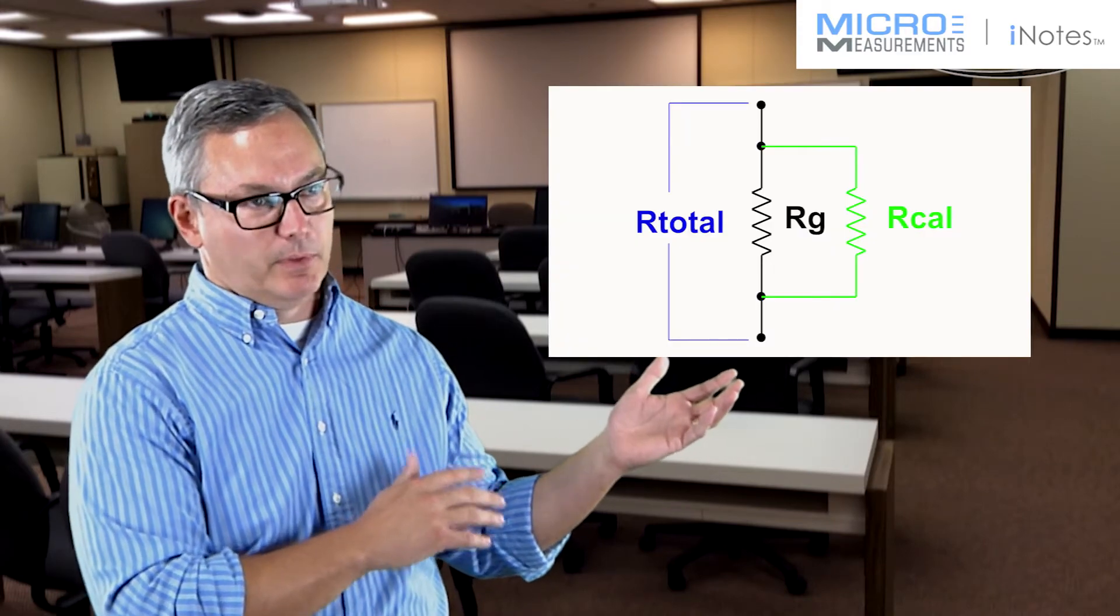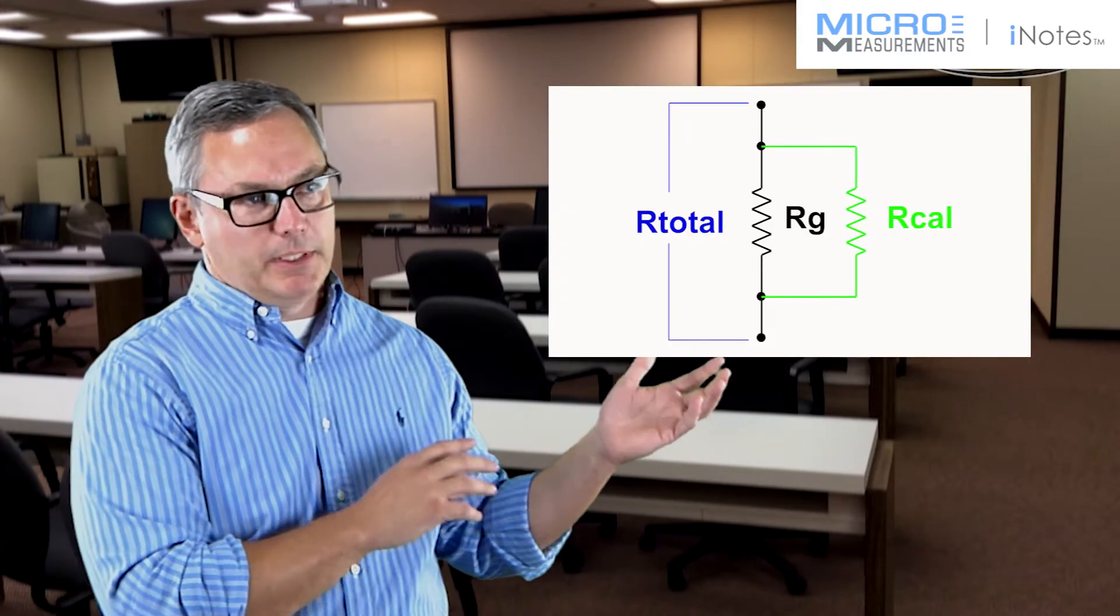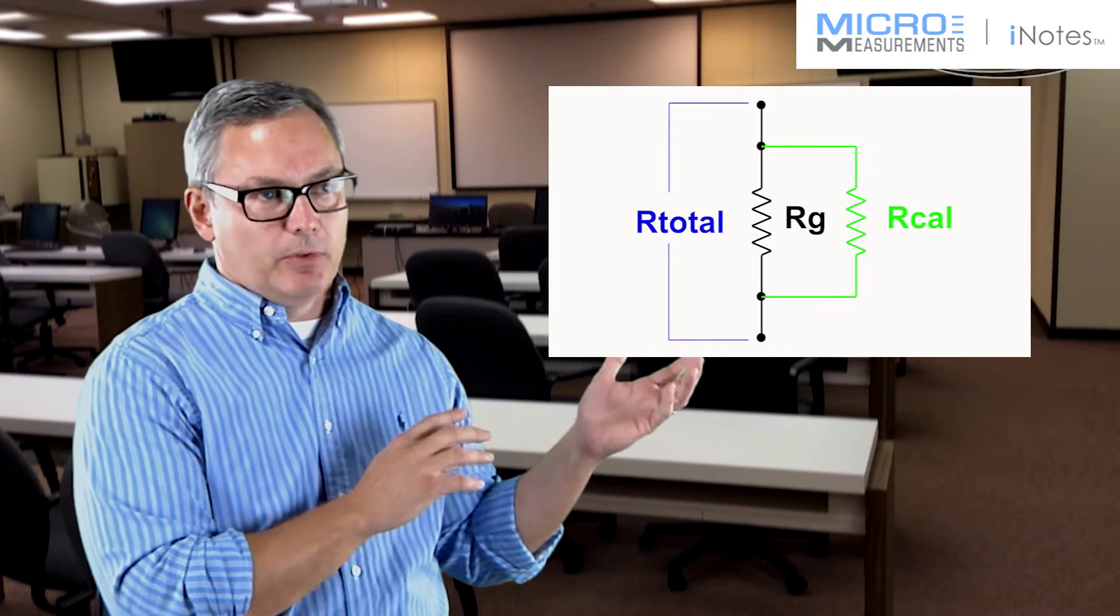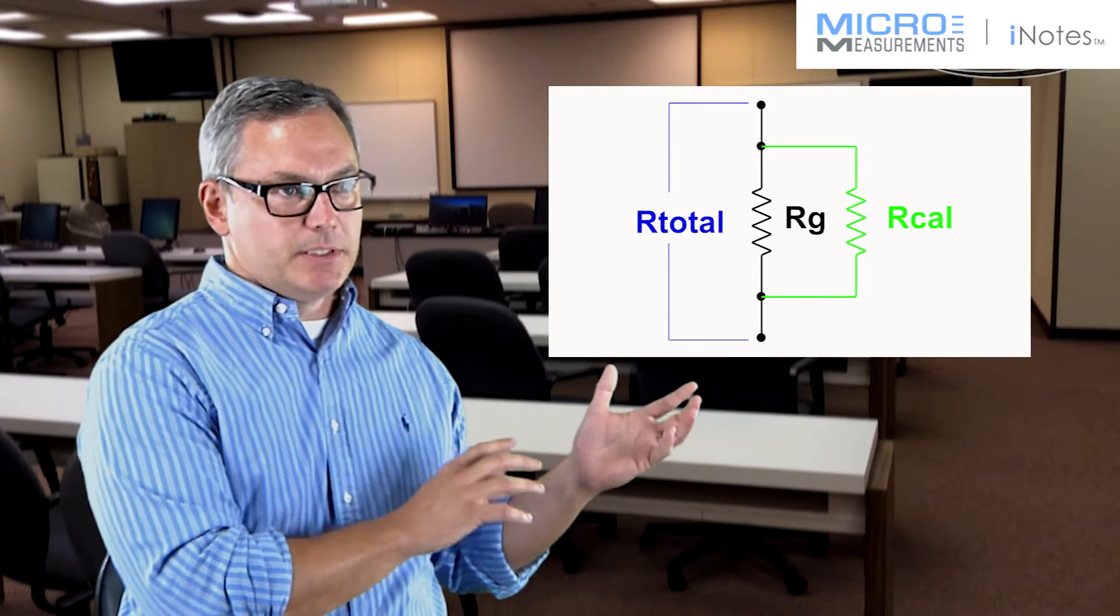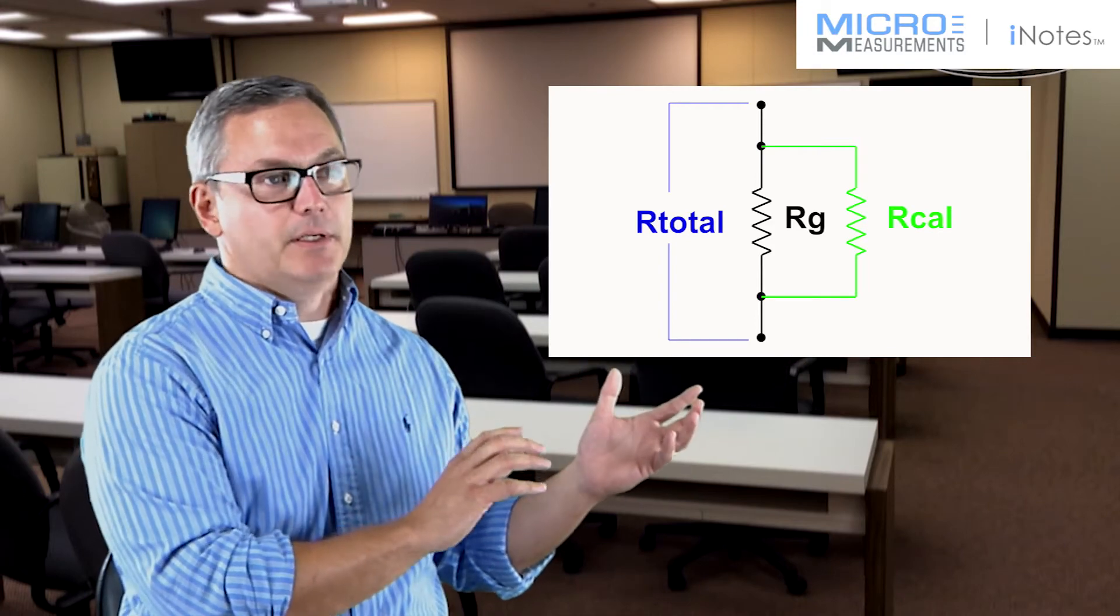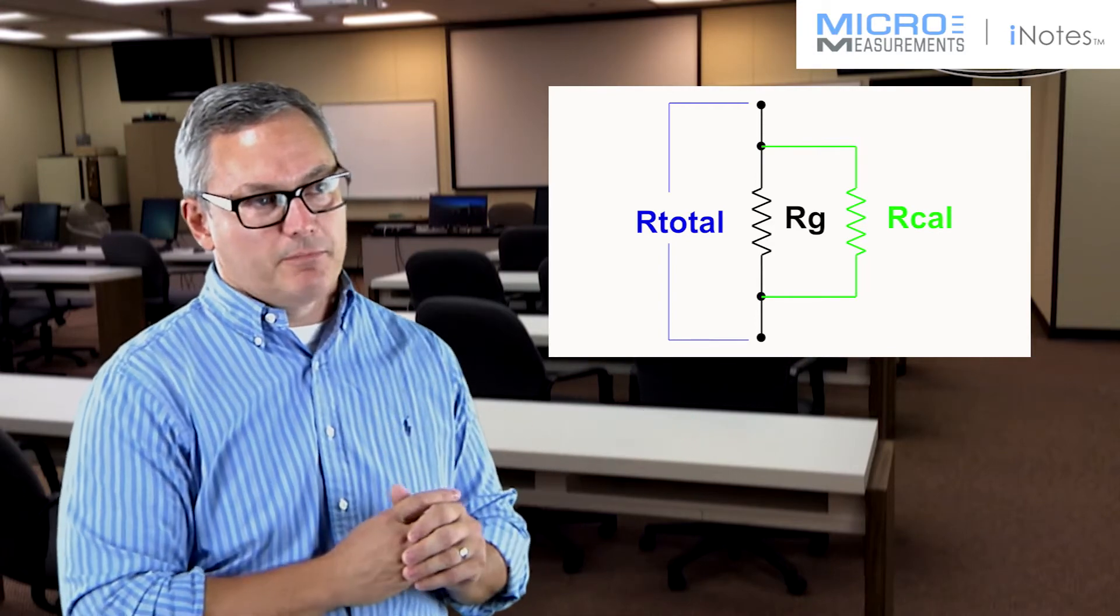When you look at shunt calibration, it's really a very simple circuit. All you're doing is taking one resistor and connecting it in parallel across another one. Once you connect this resistor in place, it creates a drop in the resistance, and that drop in resistance will be equivalent to the amount of resistance change you would get from a strain gauge.